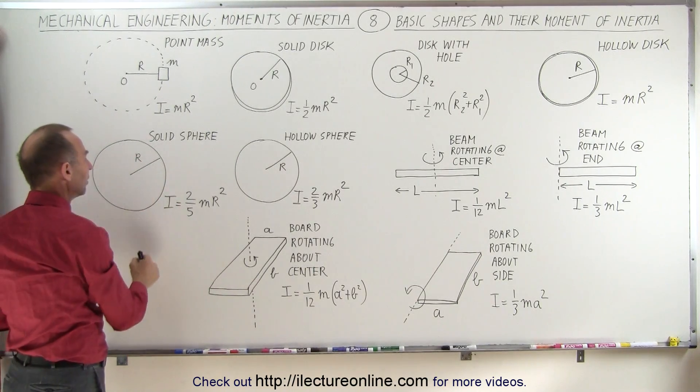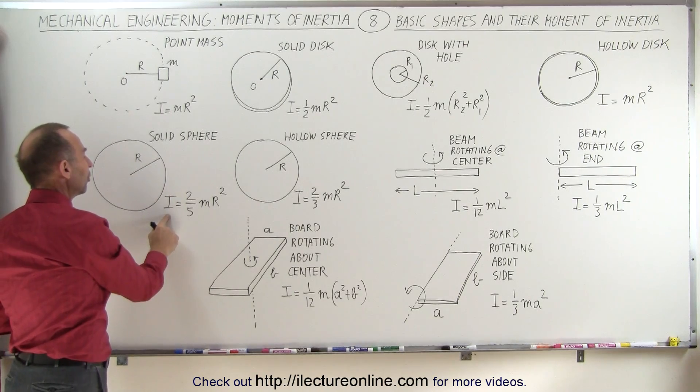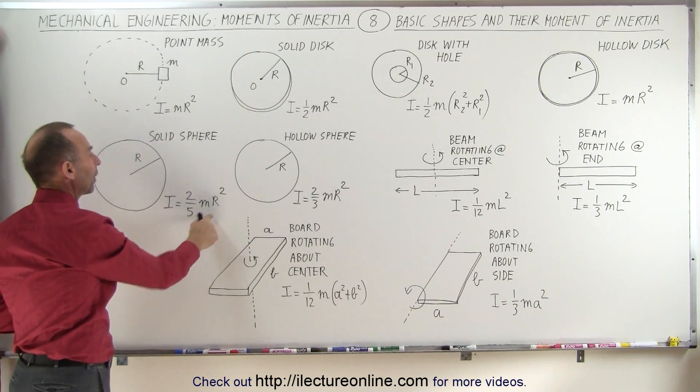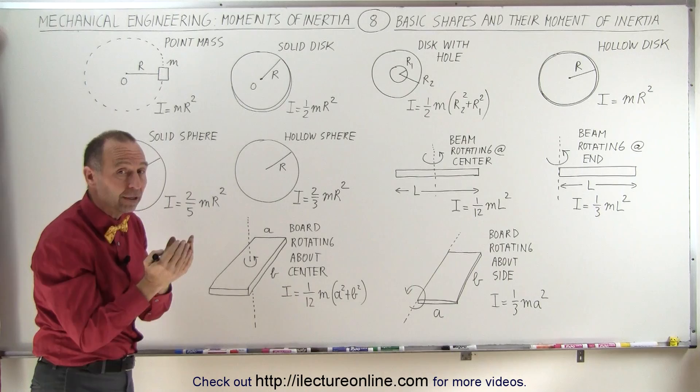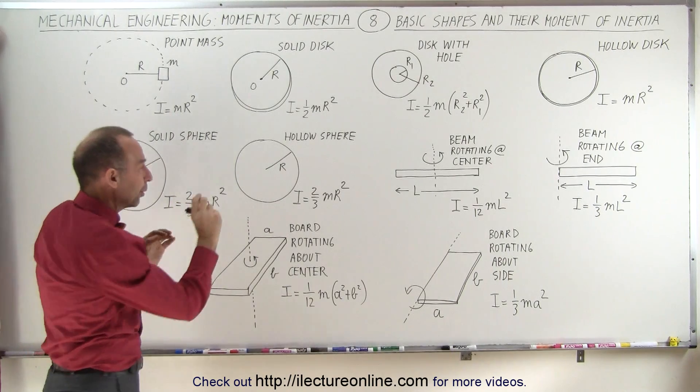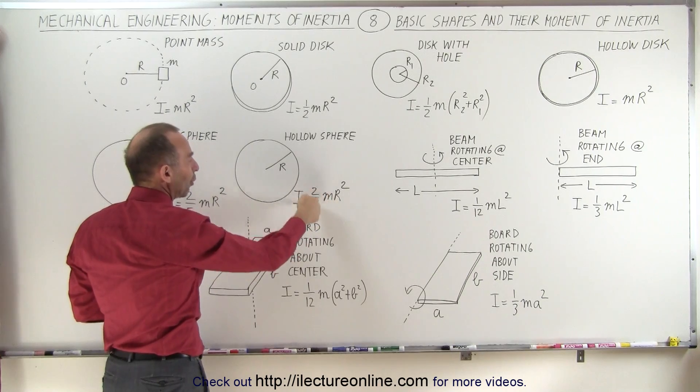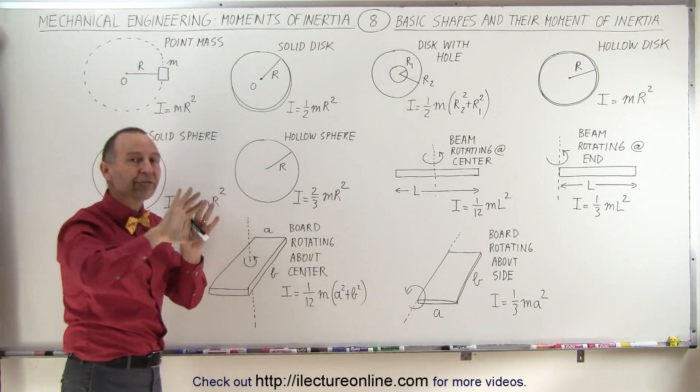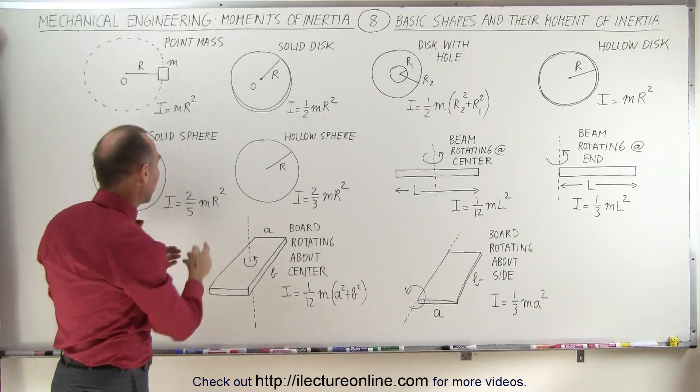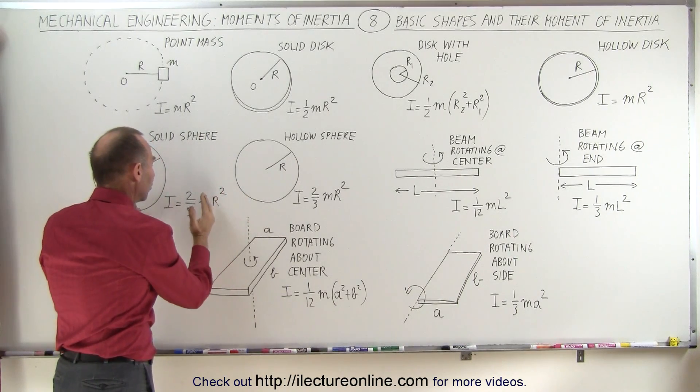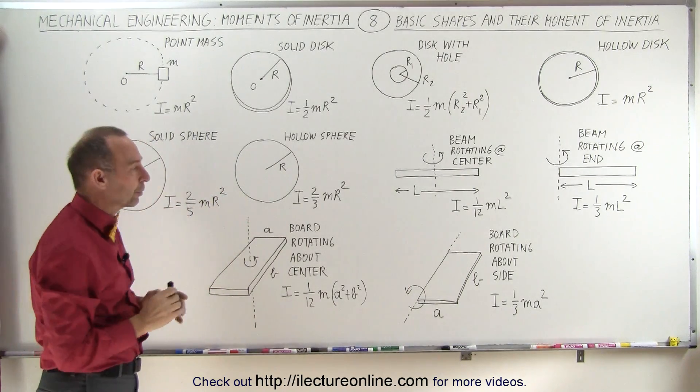If we have a solid sphere of radius R, the moment of inertia is 2/5 mR squared. For a hollow sphere, where more mass is away from the point of rotation, it's 2/3 mR squared. Notice the coefficient becomes larger as mass is distributed farther from the center of rotation and smaller when mass is closer.